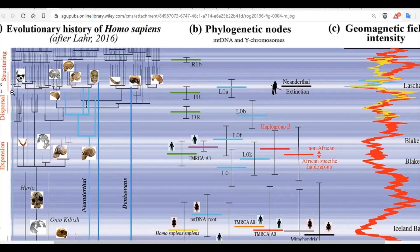You can see how rapidly it increases as we move towards today. On the lowest field intensity drop, the largest amount of speciation happened in Homo sapiens.